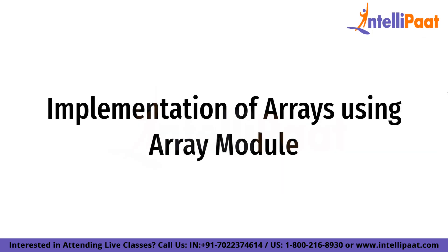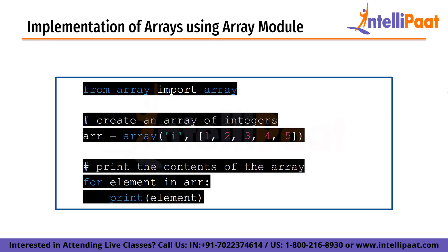In Python, arrays can be implemented using the built-in array module or the more powerful NumPy library. The array module provides a simple implementation of arrays that can store homogenous data. We import the array module and create an array of integers using the array function. The first argument specifies the type of elements — in this case 'i' for integers — and the second argument is a list of initial values. We can access elements using indexing. The array module supports signed and unsigned integers, floating point numbers, and characters.